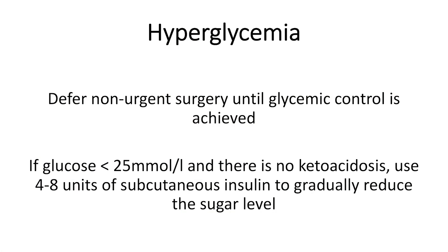You also need to know how to manage hyperglycemia or hypoglycemia in the perioperative period. For hyperglycemia, defer non-urgent surgery until glycemic control is achieved. If glucose level is less than 25 millimoles per litre and there is no ketoacidosis, you can use 4 to 8 units of subcutaneous insulin to gradually reduce the sugar level. If ketoacidosis is present, seek urgent medical help.